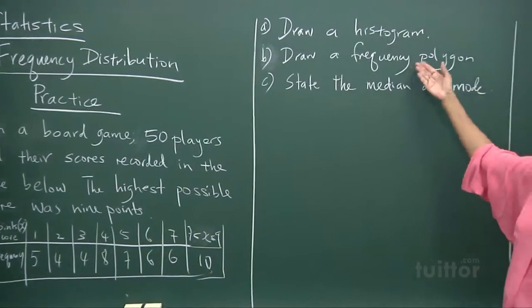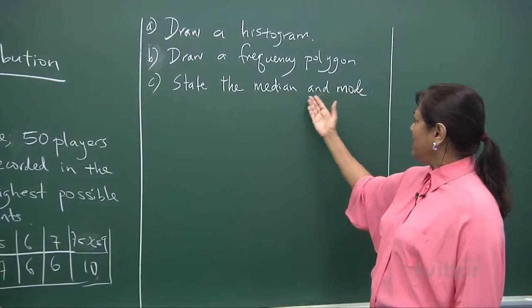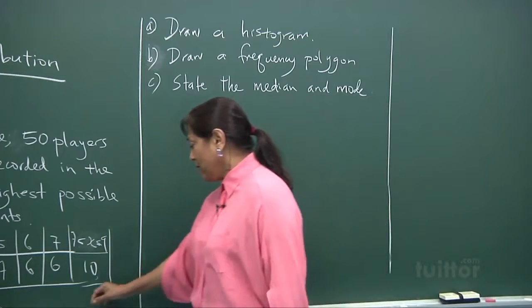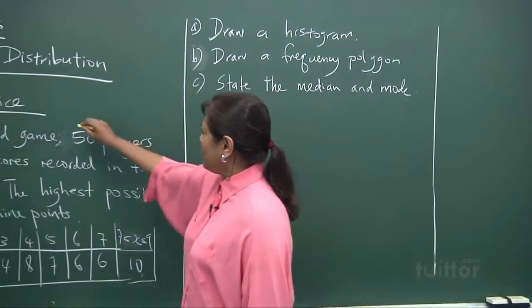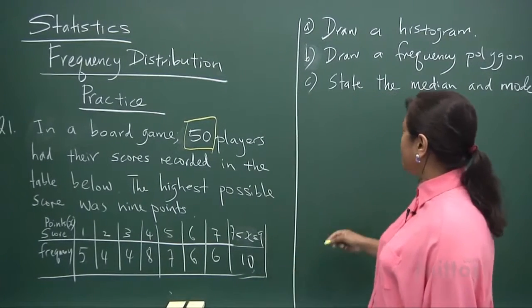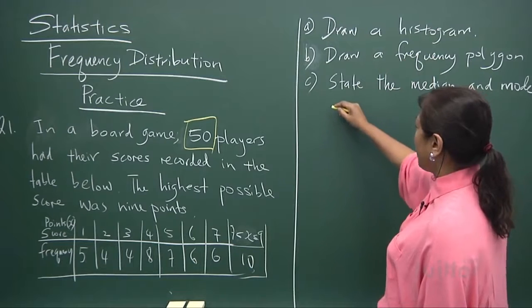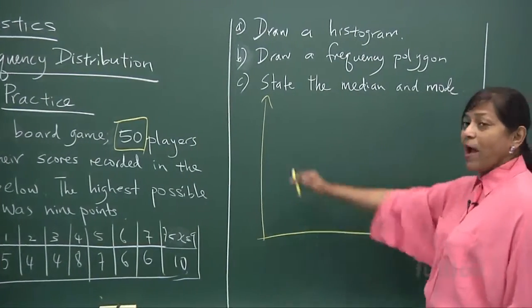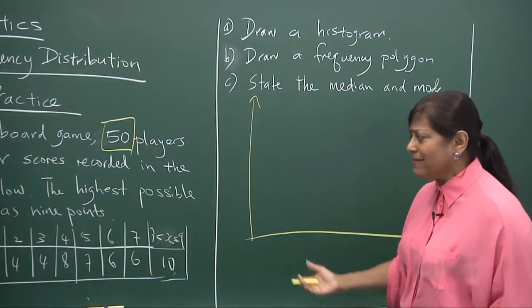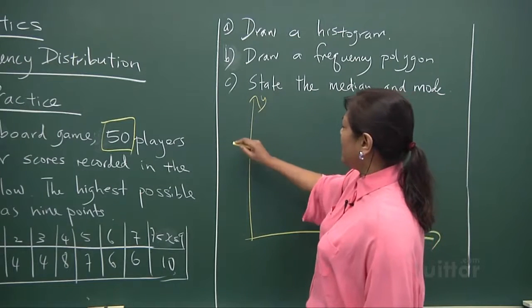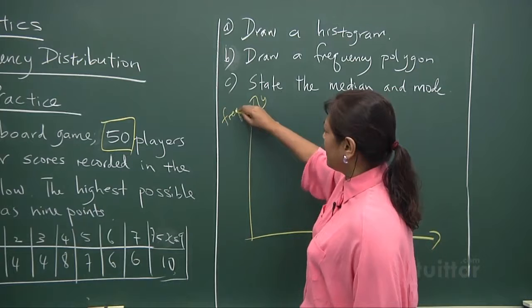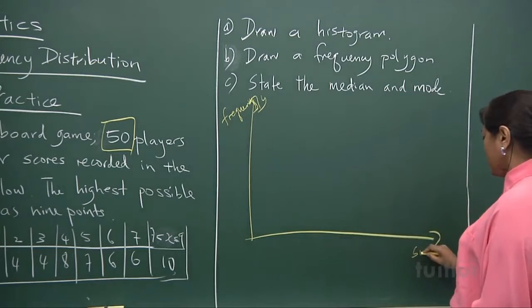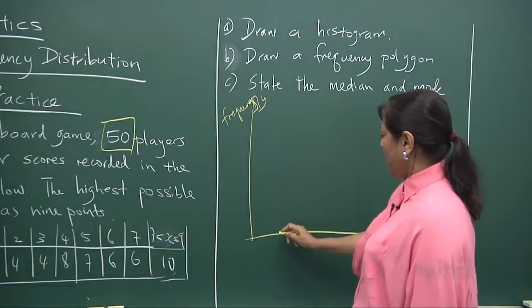So that's the score for each score. That's what you get. But when they say that the highest possible score is nine points, what does it mean? It means from after seven, that means eight and nine. You get ten people scoring in that score. So now they want you to draw a histogram. What else? A frequency polygon. And then they want you to state the median and the mode. And if they want to find the mean, it's not a hassle.